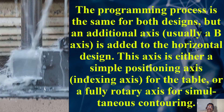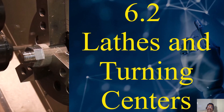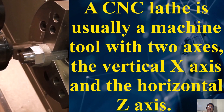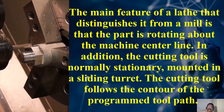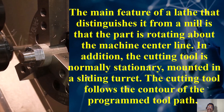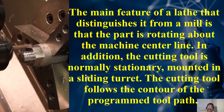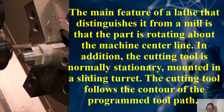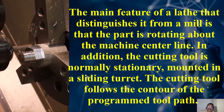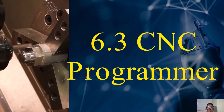The lathe and turning center: a CNC lathe is usually a machine tool with two axes — the vertical X axis and the horizontal Z axis. The main feature that distinguishes a lathe from a mill is that the part rotates about the machine center line. The cutting tool is normally stationary, mounted in a sliding turret, and follows the contour of the programmed tool path. The modern lathe can be horizontal or vertical — horizontal is far more common. A CNC lathe can be so versatile that it is often called a CNC turning center.